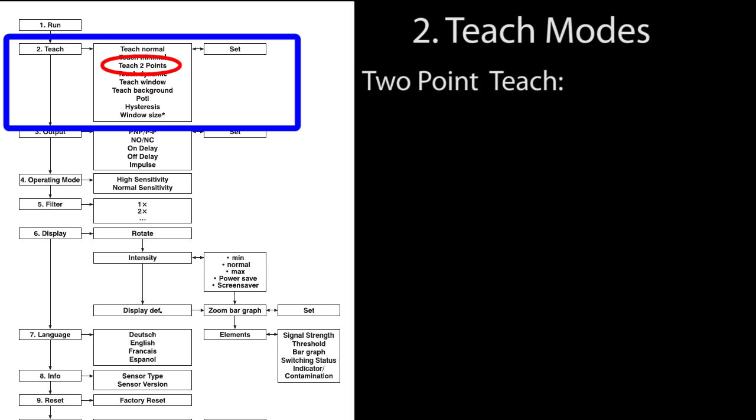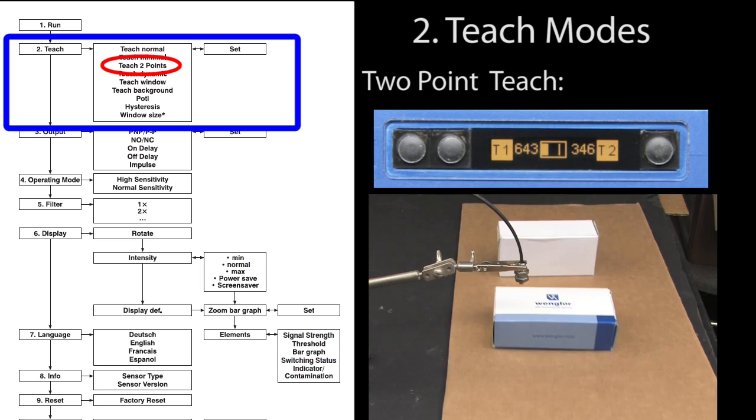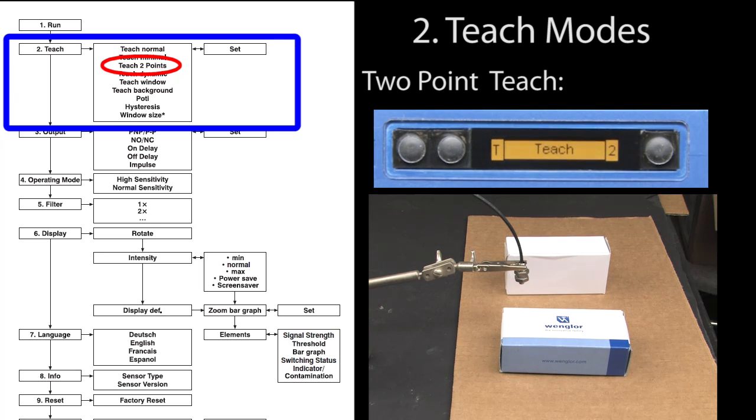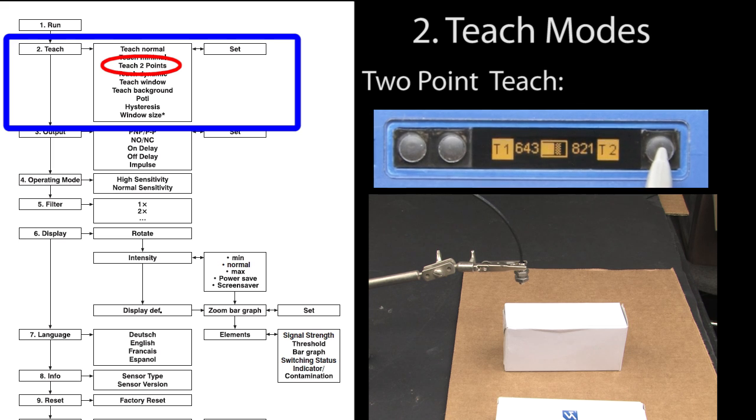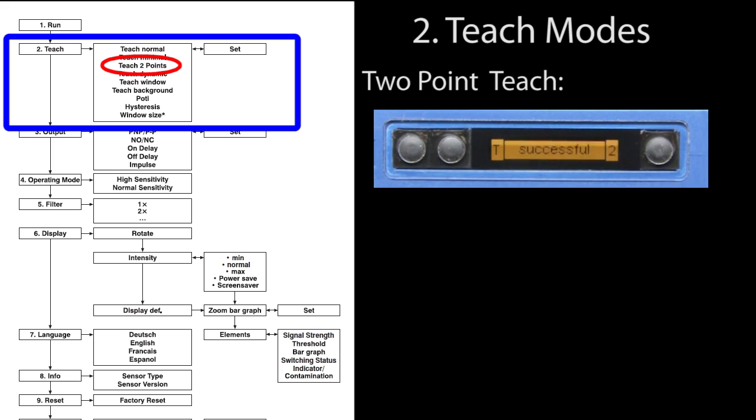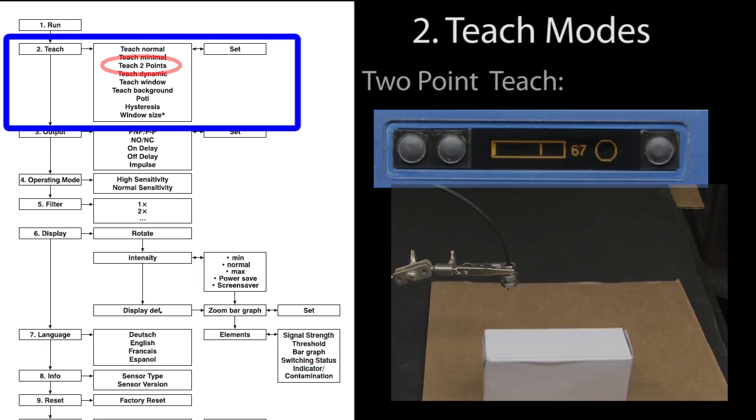Two point teach is the same as dynamic teach except you manually choose the points. Put the first object under the sensor and press T1. Put the second object under the sensor and press T2. Since we used the same objects, guess what? We get the same answer. And sure enough in run mode, the sensor only detects the larger object.